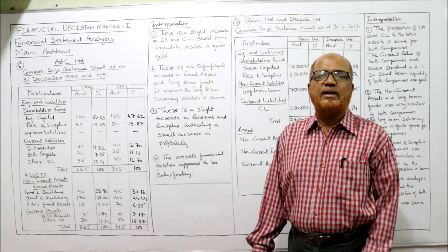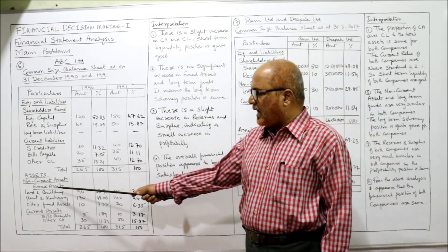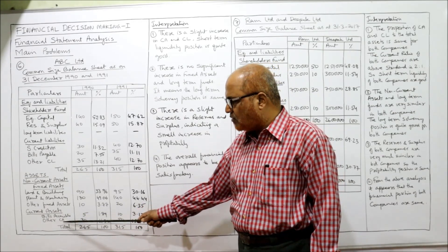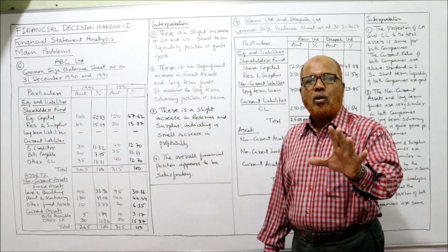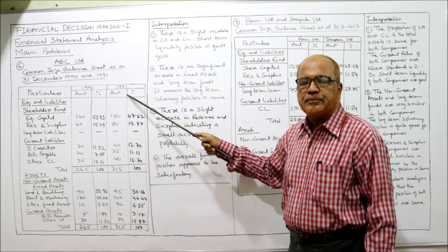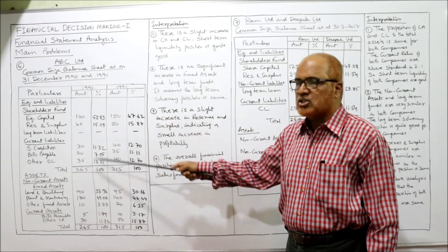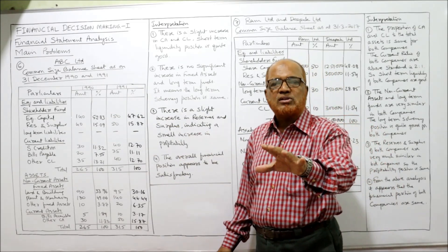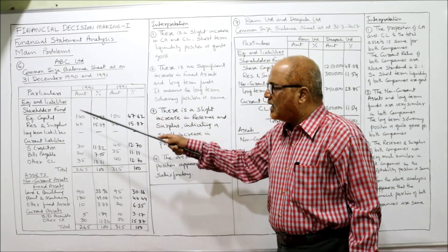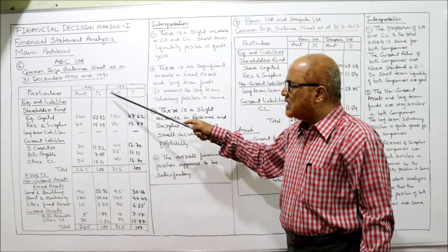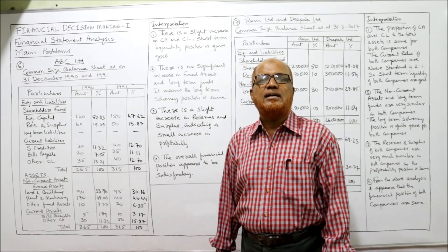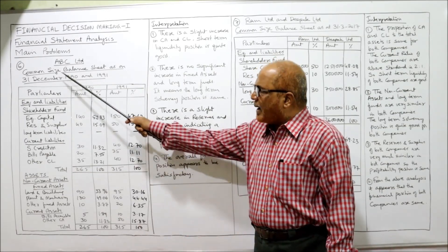The asset side is divided into two categories: non-current assets and current assets. Under non-current assets we take fixed assets: land and building, plant and machinery, other fixed assets. Current assets: bills receivable and other current assets. Take all values given in the problem and place them in the amount column. Do not write anything in the percentage column yet. The next step is finding out the percentages. This is a balance sheet problem.